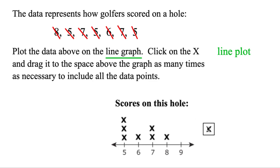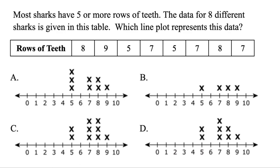So once you just click and drag that X over that many times, you're good for that one. But just one final type. Most sharks have five or more rows of teeth. The data for eight different sharks is given in this table. Which line plot represents this data. Well, you know what to do.